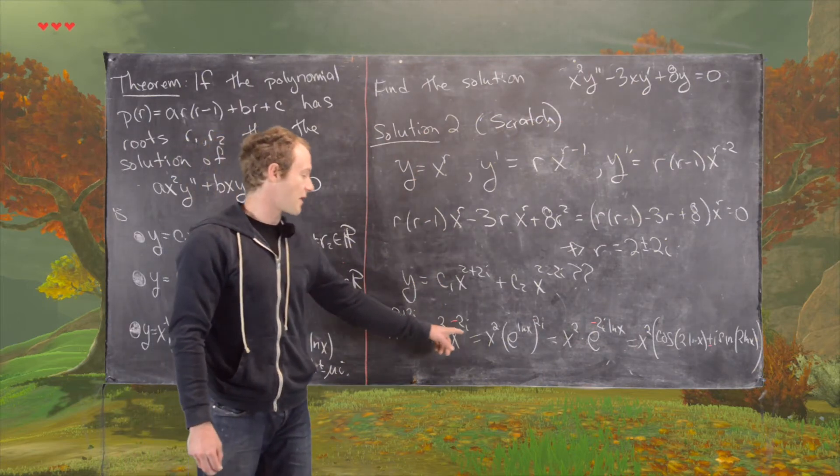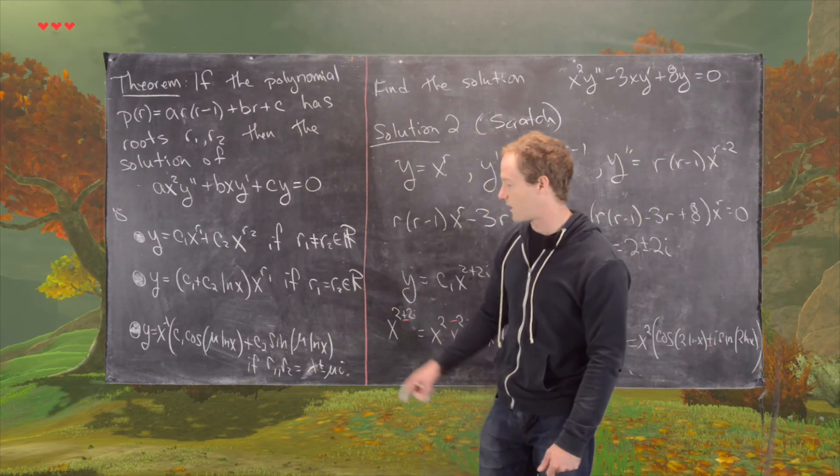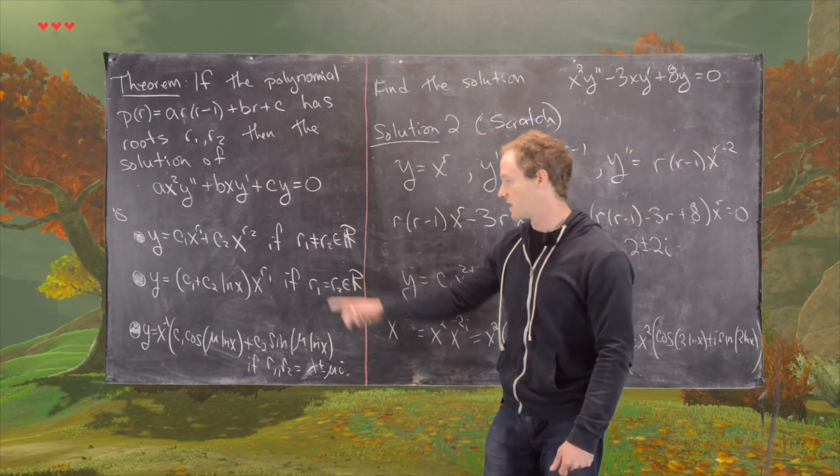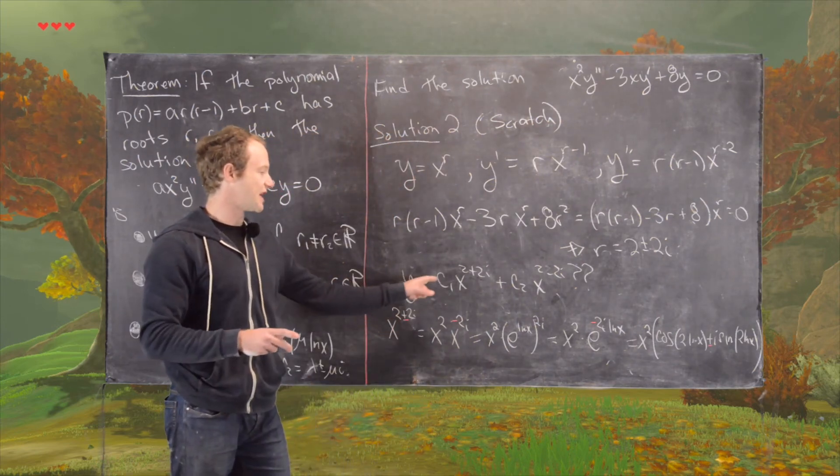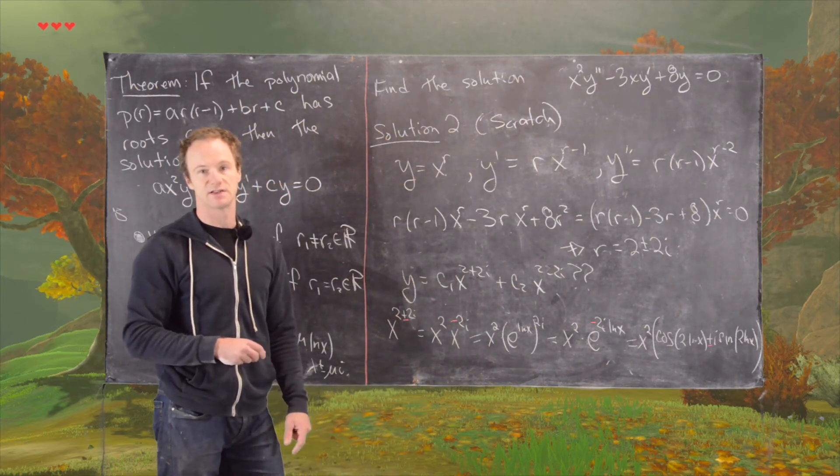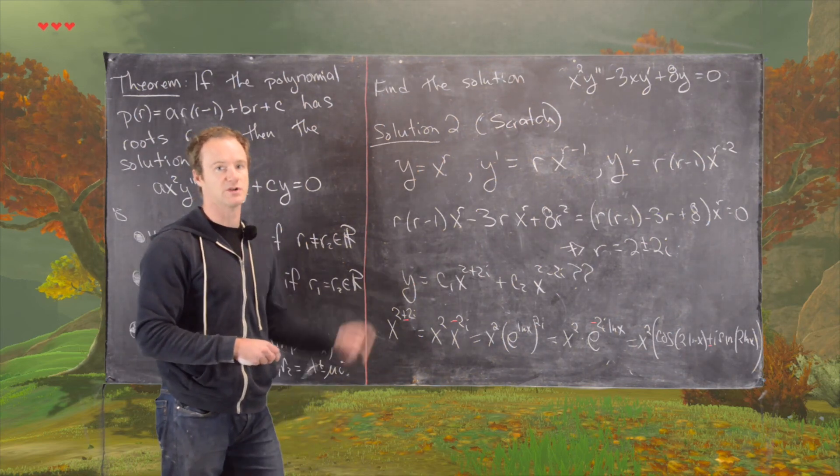And then going from this solution to the one we had previously, which did not involve any complex numbers in the solution, is just a matter of making a change of variables on these constants. So I'll leave that for you to check. We're done with this example.